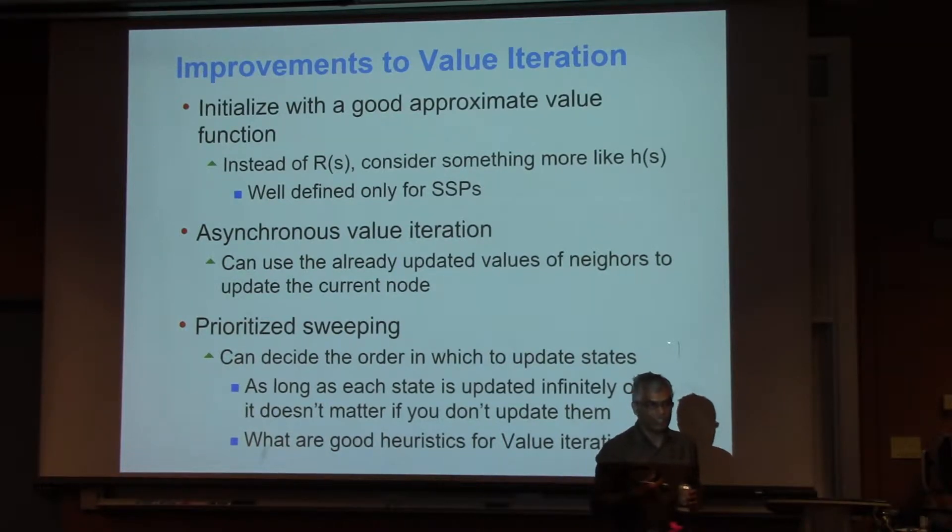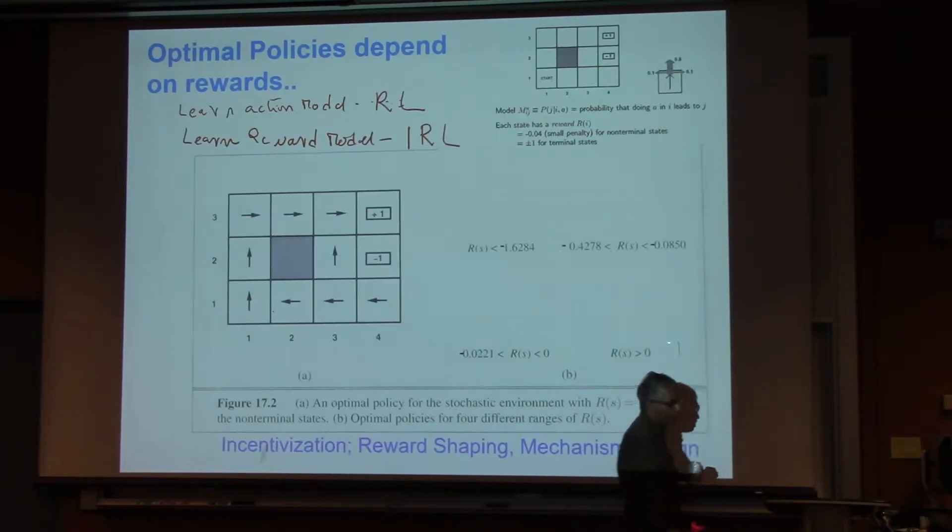Because before you change your value, if your neighbor already realized that they're much richer than you thought they were in the previous iteration, you might as well just take that into account in updating your value. So that turns out to be a faster way of evaluating value iteration.